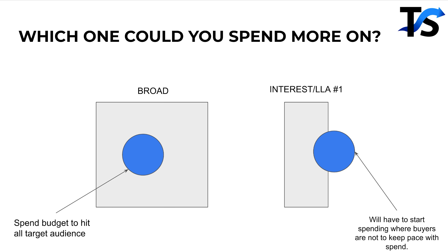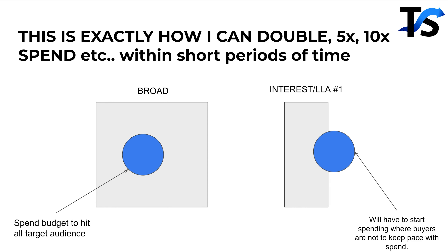Which audience do you think you can spend more on? This dives back into why when you test at a low budget — $50 or $60 a day — you find a winning audience or ad, throw it in your scaling campaign, and performance drops. That's because you're limiting the machine learning. That's exactly why we don't do audience testing anymore — I want whatever ad I put up to have the full potential to perform, not have the audience limiting it. This is how I can 2x, 5x, 10x my spend within short periods of time.